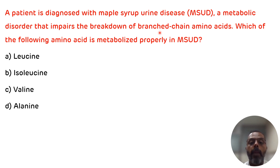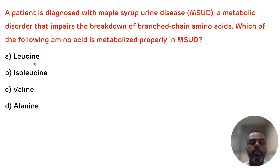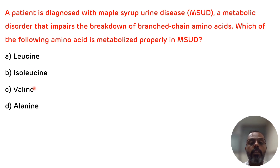The branched-chain amino acids are leucine, isoleucine, and valine. In Maple Syrup Urine Disease, the accumulation of keto acids of isoleucine, leucine, and valine gives a characteristic sweet odor in the urine, which resembles that of maple syrup — hence the name Maple Syrup Urine Disease.